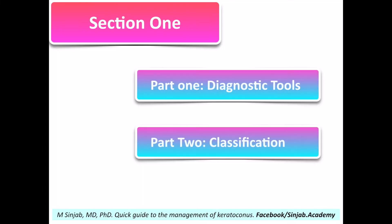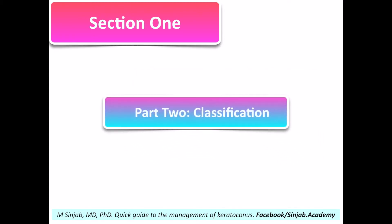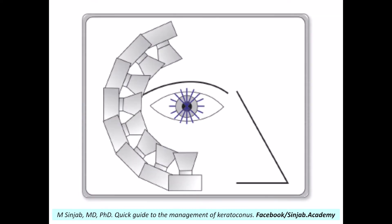In the last videos, I talked about diagnostic tools. In this video, I will talk about the classification of ectatic corneal disorders, but before starting with the classification, I'd like to mention some differences between the three major topographers: the Cyrus, the Galilei, and the PENTA-CAM.